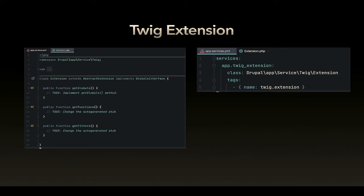To create a Twig extension is very easy. You write a class — you see here 'Drupal app'. I name my module 'app' every time, like a Symfony app. You need the Globals interface only when you want to use globals. It has to extend AbstractExtension, then you can use functions, filters, and other stuff. Then you register it as a service. The important thing is the tag has to be 'twig.extension' and that's it. Flush the cache and you can start.